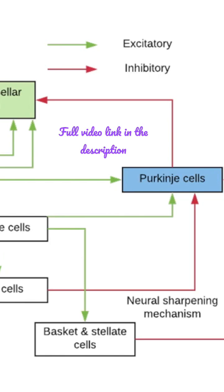The green color arrows are excitatory whereas the red color arrows are inhibitory in action. The climbing fibers excite the Purkinje cells directly. On the other hand, the mossy fibers excite the Purkinje cells indirectly through the granule cells.